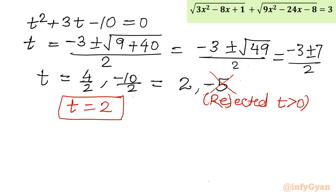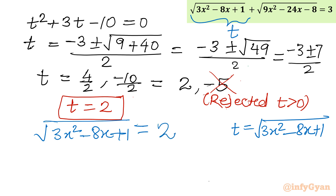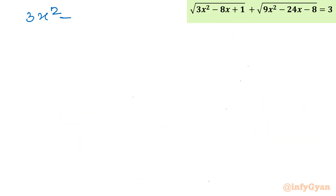Now, what was our t? Let me check. Our substitution was t = square root of (3x² - 8x + 1). So putting t = 2: square root of (3x² - 8x + 1) = 2. Squaring both sides gives 3x² - 8x + 1 = 4. Bringing all terms to the left: 3x² - 8x - 3 = 0.